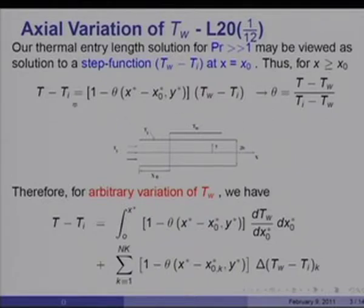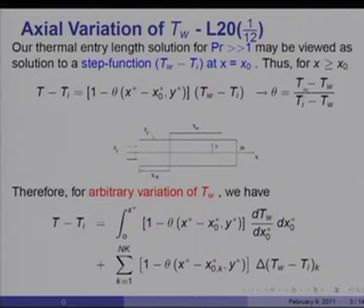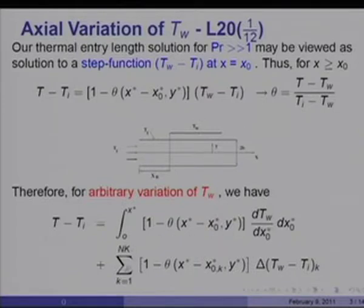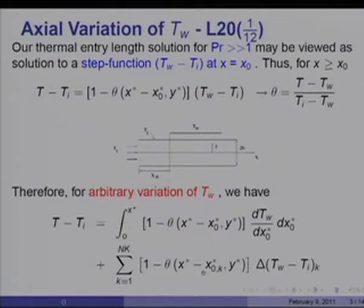Therefore, for x greater than x_naught, we may write T minus T_i equal to (1 minus θ(x* minus x_naught*, y*)) times (T_w minus T_i), where θ was defined as (T minus T_w) over (T_i minus T_w). Just as we considered the external boundary layer situation, for the internal boundary layer situation it would look the same. Therefore, for arbitrary variation of T_w, we have T minus T_i equal to an integral from 0 to x* of (1 minus θ) times (dT_w/dx_naught*) dx_naught*, for the continuous part, plus a sum over discontinuous jumps (1 minus θ(x* minus x_naught_k*, y*)) times ΔT_{w,k}. This exactly follows what we did for external boundary layers.